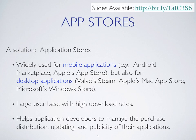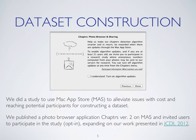We have come up with another solution: to use app stores or application stores. These are widely used distribution channels for software for mobile applications such as Android's marketplace and Apple's App Store, but also for desktop applications. These are stores with a very large user base and high download rates, helping application developers manage purchase, distribution, updating, and publicity of their applications. We did a study using the Mac App Store to alleviate the cost issues of reaching many potential participants for constructing a dataset.